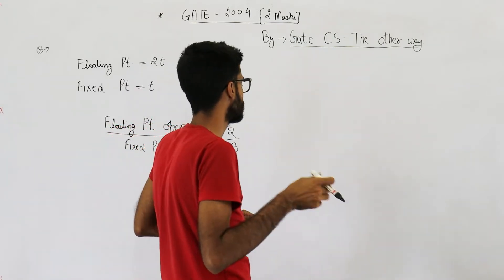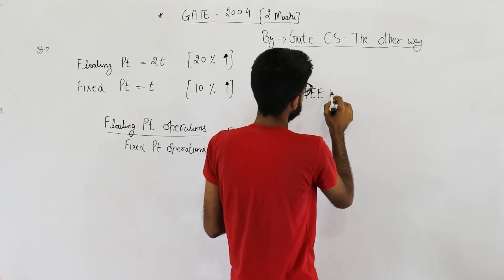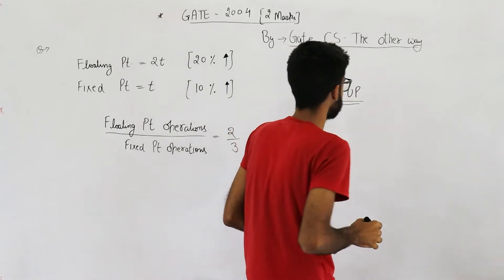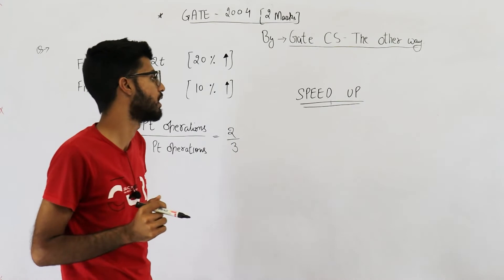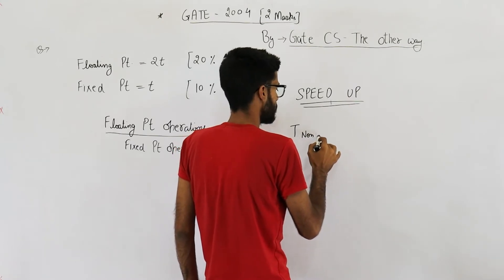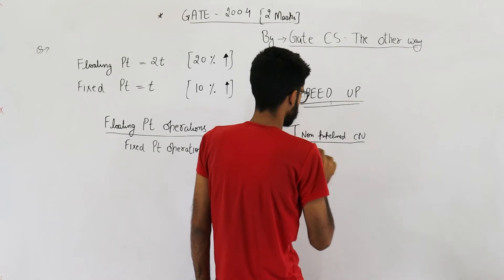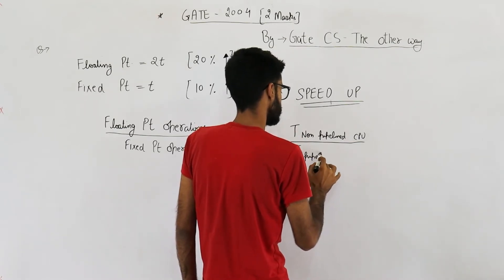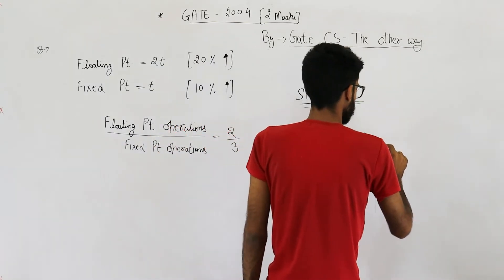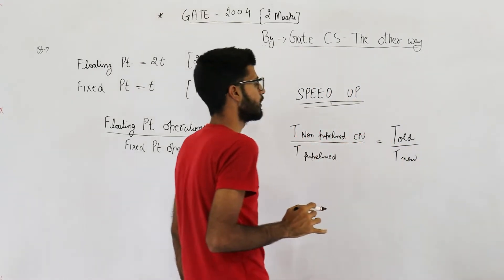You can see these four options. They are asking about speed-up. First thing you need to know: what is speed-up, what is the formula of speed-up? Speed-up is how many times the speed has increased — what is the multiple. In pipelining we have already seen that speed-up is time taken in non-pipelined CPU divided by time taken in pipelined CPU.